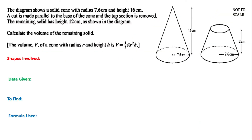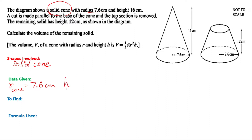The diagram shows a solid cone with radius 7.6 centimeters. The radius of the cone is 7.6 centimeters. The height of the cone is given as 16 centimeters. This is H, this is R.